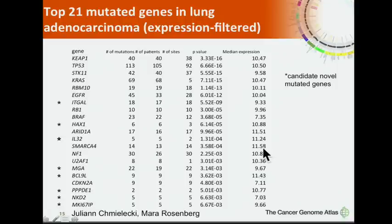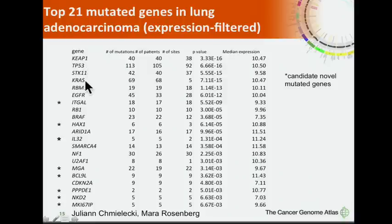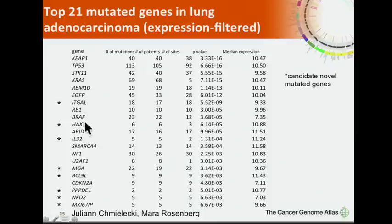This is a list of the top 21 mutated genes in lung adenocarcinoma, expression-filtered, generated by Julianne Chmielecki and Mara Rosenberg and colleagues. At the top are a number of known genes, many present previously in the Ding and Getz manuscript: TP53, STK11, KRAS, EGFR, RB1, BRAF. Others identified by more recent papers, such as Imielinski et al., include RBM10, ARID1A, and U2AF1.